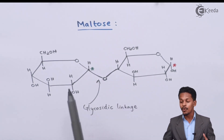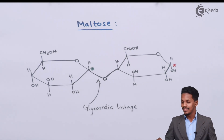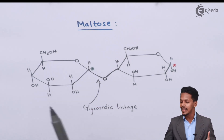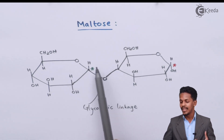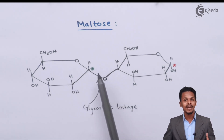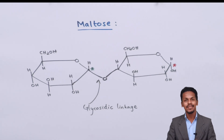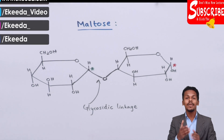This glycosidic linkage plays a very important role in understanding the structure, which I will discuss in a future lecture. So this is the structure of maltose, formed by the combination of two alpha-D-glucopyranose units, and the glycosidic linkage is what binds the two monosaccharides together. Thank you friends for watching — I hope you have understood what glycosidic linkage is, and I hope to see you next time.